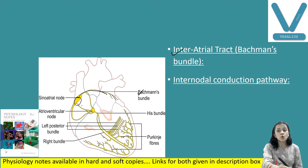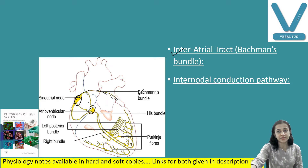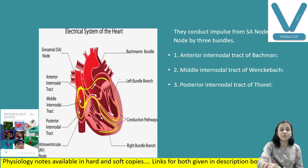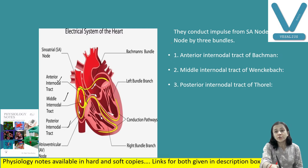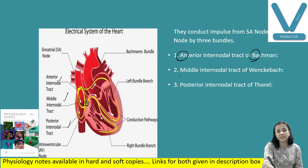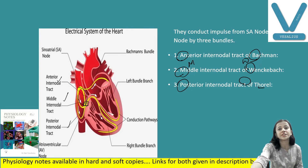The internodal conduction pathway lies between the SA node and AV node. There are three internodal tracks: anterior, middle, and posterior. The anterior internodal track is also known as the tract of Bachmann's — it originates from the anterior end of the SA node, passes anterior to the superior vena caval opening, and descends to the AV node. The middle one is known as Wenckebach's tract. A memory trick: Anterior = A and B (Bachmann), Middle = M and W (flip W). The posterior track is the tract of Thorel. So these are the three internodal tracks.